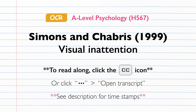Some researchers have theorised that a task that is visually demanding can often load the brain so that an individual becomes increasingly blind to any information that is irrelevant to the task, causing inattentional blindness to occur and making it less likely that the individual will be distracted from the task. This makes sense in the context of everyday life, since we are all surrounded by clutter and more objects than we can react to simultaneously, which means that our brains have to selectively allocate attention to important objects or tasks.